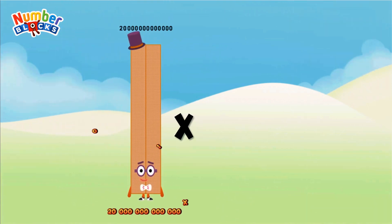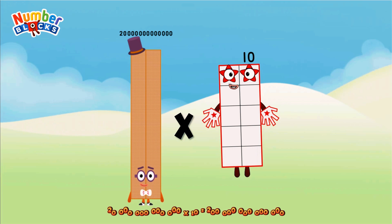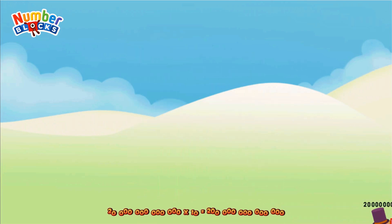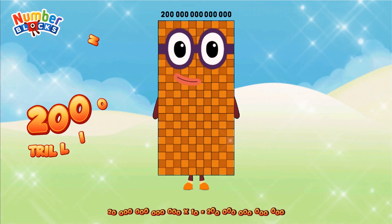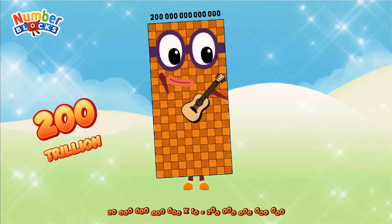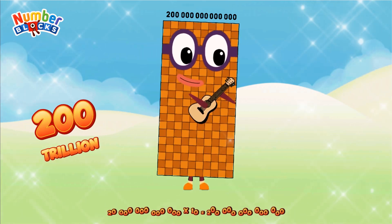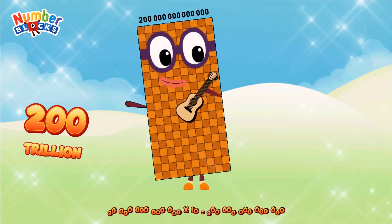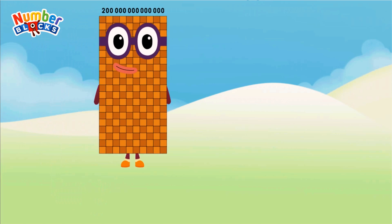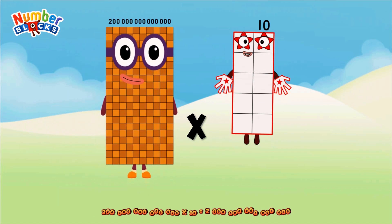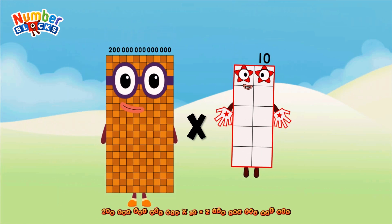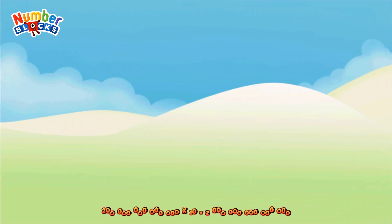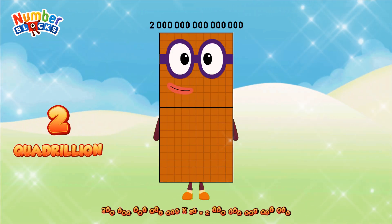Twenty trillion, multiplied by ten, equals two hundred trillion. Two hundred trillion, multiplied by ten, equals two quadrillion.